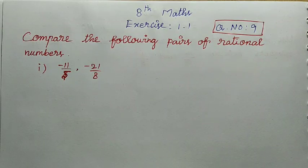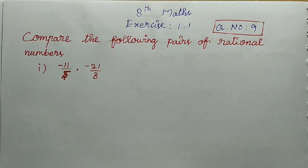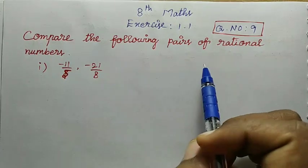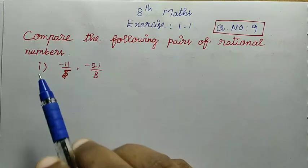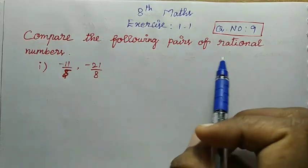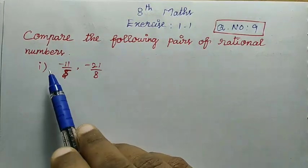Hello friends, welcome to VM Literacy channel. In this channel, 8th standard full book edition, exercise 1.1, question number 9: compare the following pairs of rational numbers. You can compare the rational numbers.